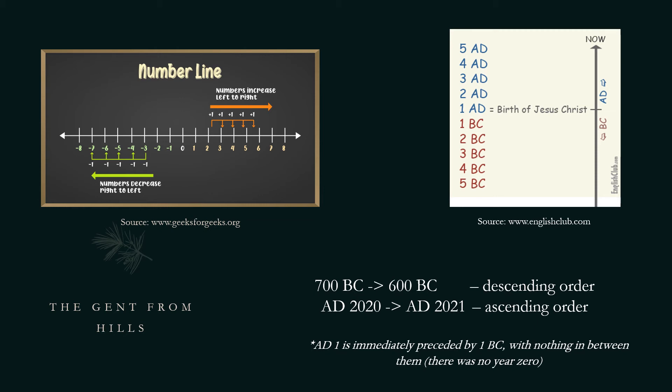It is also important to note that AD 1 is immediately preceded by 1 BC with nothing in between them. Hence, there was no year 0.